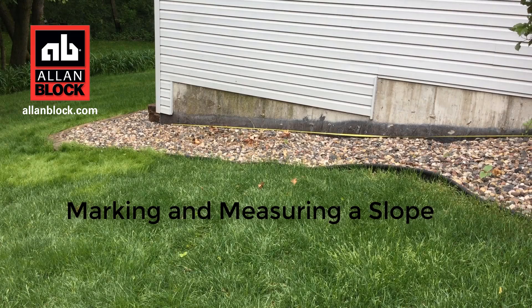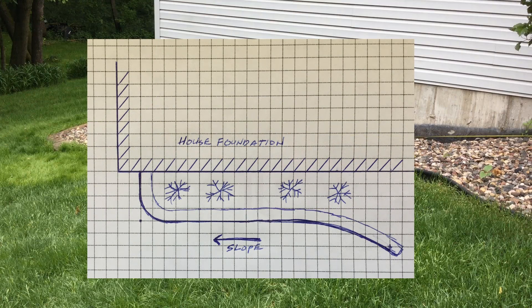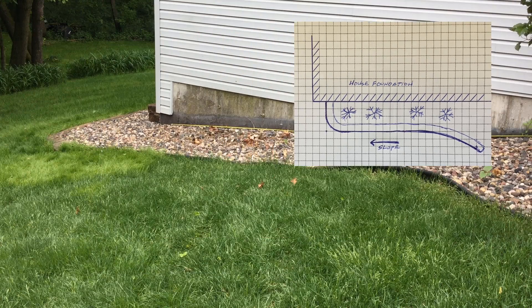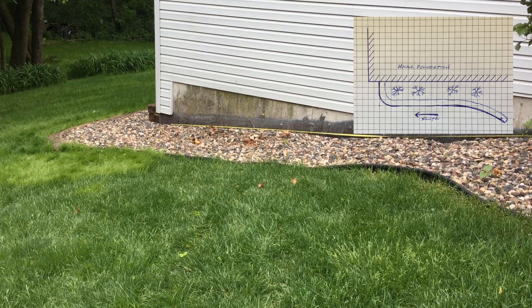How to mark and measure a slope for a retaining wall design. Start by drawing a layout of the proposed site with where the wall will be located. This example is a slope on the side of a house with four points of reference. Using the house wall as a baseline will give a defined starting point to where the wall will be measured from.